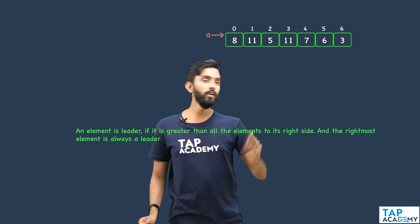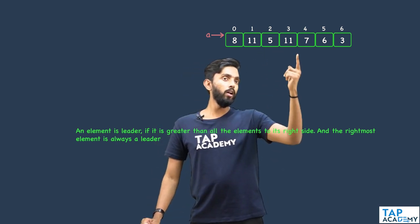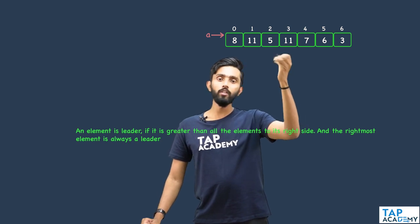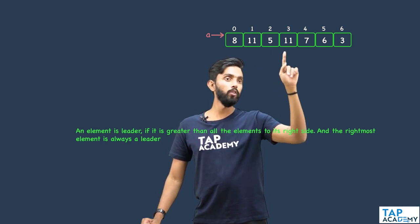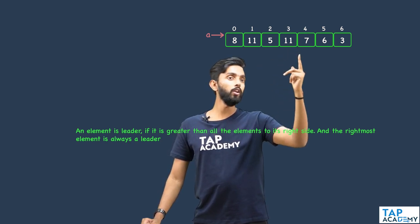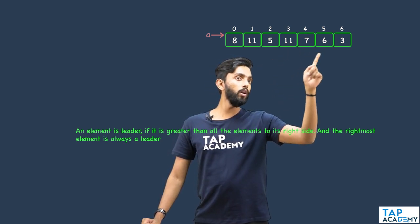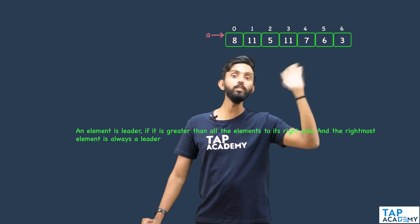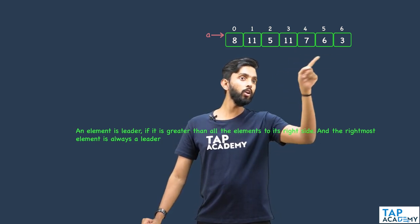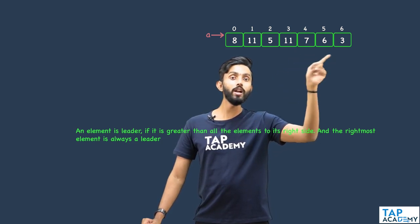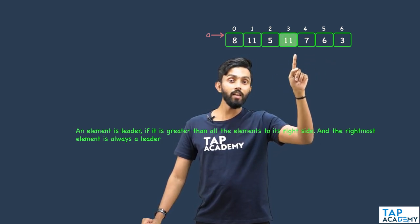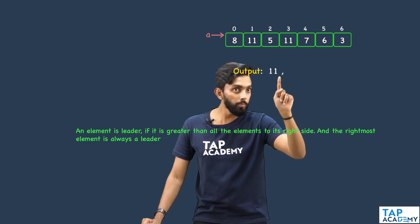Next, 5. Look at it — 11 is greater, so 5 is not a leader. Now look at the second 11: 7 is smaller, 6 is smaller, 3 is smaller. So 11 is greater than all elements to its right, making this 11 a leader. Print it.